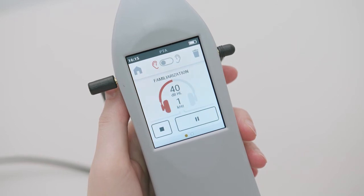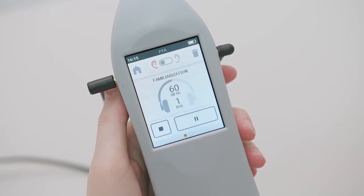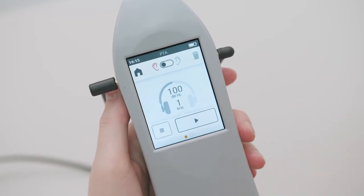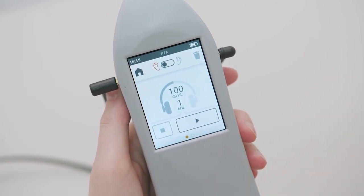The automatic examination includes an initial familiarization phase to train the patient how to do the threshold determination procedure, followed by the real test at all enabled frequencies. You can pause the examination by pressing the related icon or stop it by pressing the stop icon. The examination will end automatically when all the frequencies enabled have been tested on both ears.